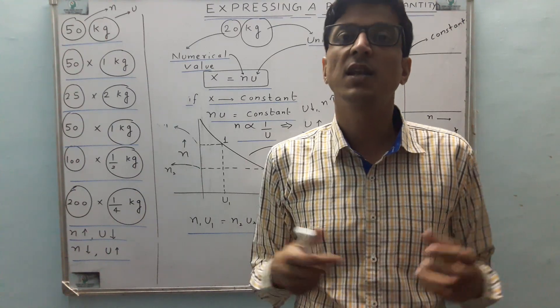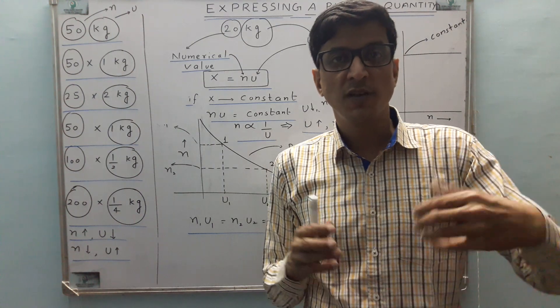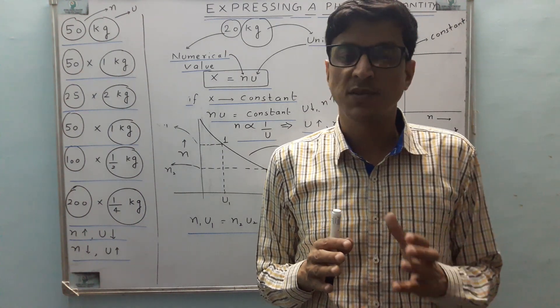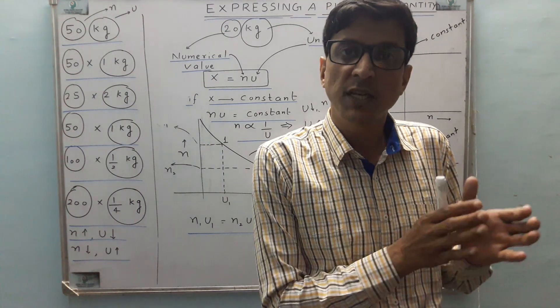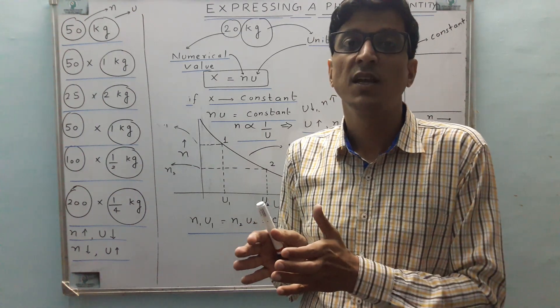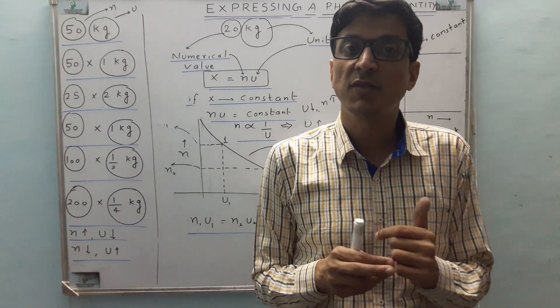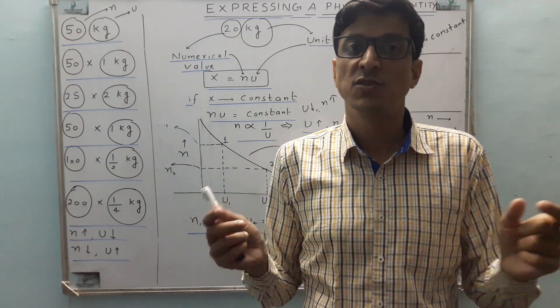You can analyze the situation. Suppose we have to measure 50 kg. We have two options: the first is we have 51 kg masses, and another we have 25 2 kg masses. So if you increase the size of the unit, then half the masses will be required, half the numbers will be required. So that is as simple as that.